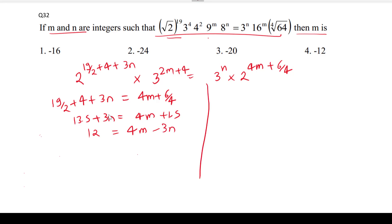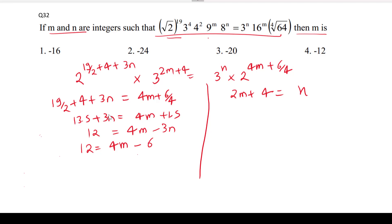Now equating the powers of 3. Putting the value of n here we get 4m minus 6m minus 12. So it will be 24 and this will be 2m, so the value of n will be minus 12.